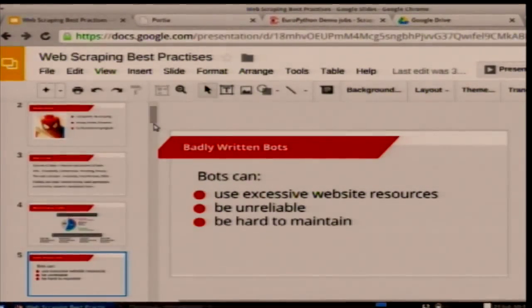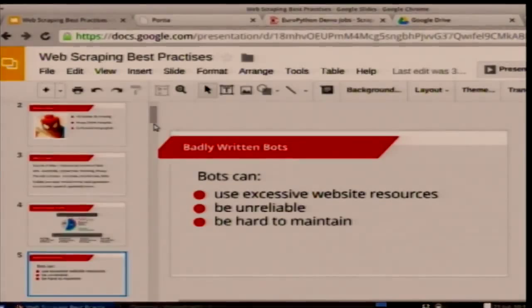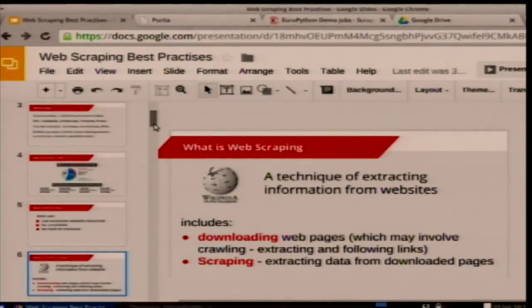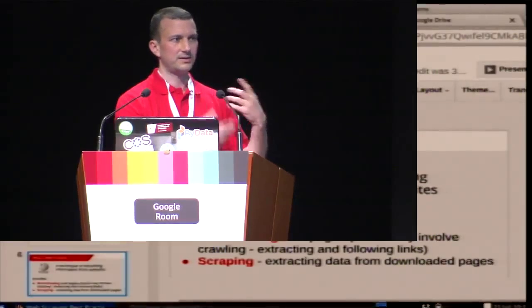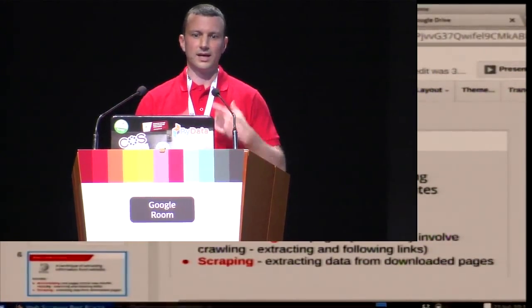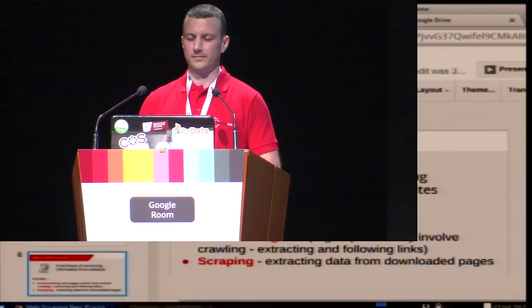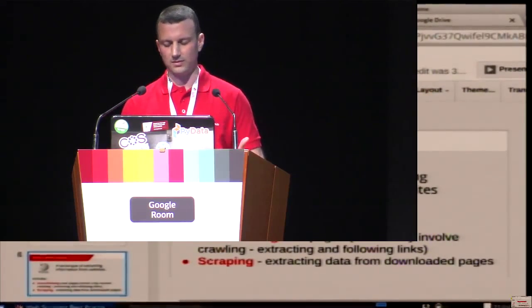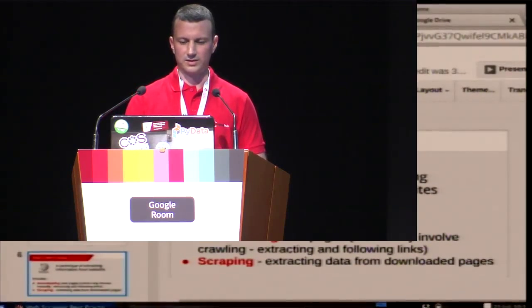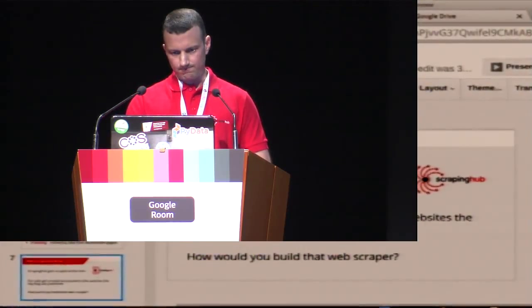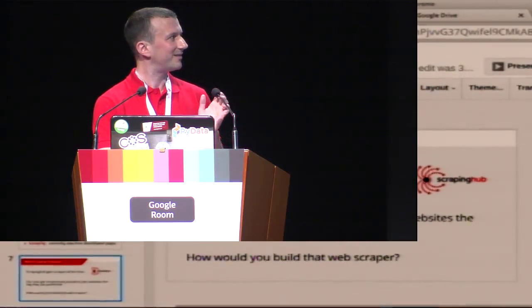Writing bad bots causes more trouble for smaller websites — they might have bandwidth limits, for example, and many HTTP libraries don't compress content, so you easily go over their bandwidth limits. Also, doing a bad job means your web scrapers are very hard to maintain, which is a notorious problem because websites change. When I think about web scraping I like to think of it in two parts: first, actually getting the content — finding good sources and downloading it; second, the extraction — extracting structured data from that downloaded content.